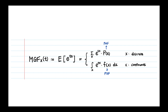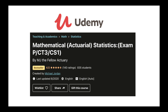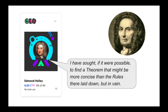De Moivre was also the first to show moment generating functions — magical mathematical formulas that allow you to calculate all the moments of a distribution. It's amazing to see how much of statistics is based on his work, which is why, when Halley was complaining the math was too difficult, Abraham de Moivre was able to come in and save the day.